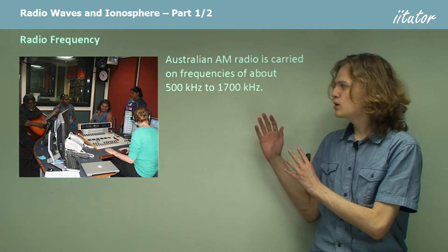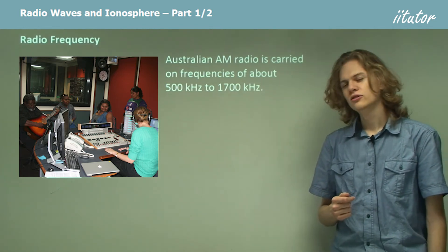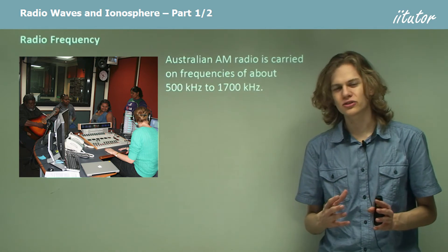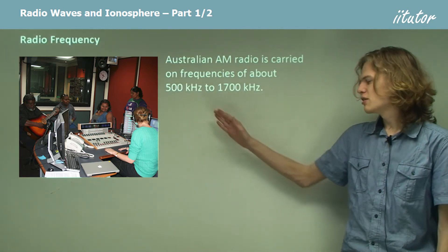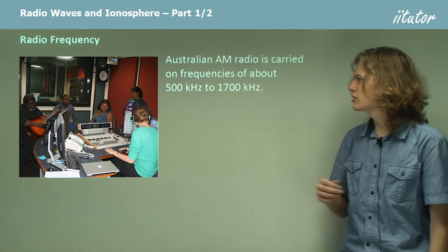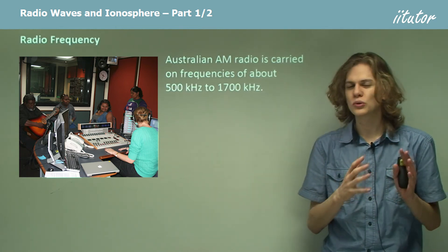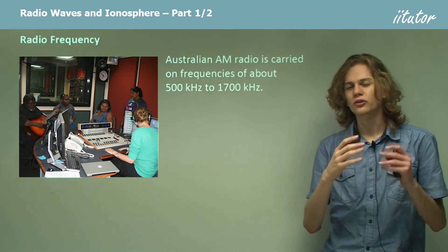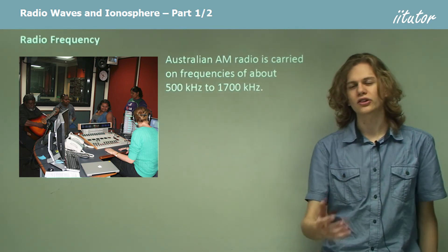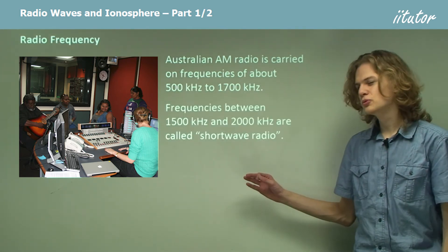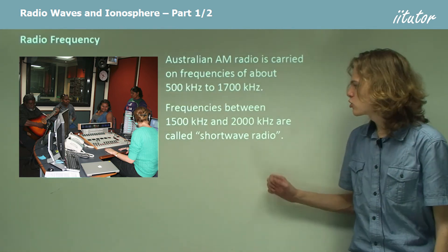Australian AM radio broadcasts on frequencies of between about 500 kilohertz to almost 2000 kilohertz. This is the band of frequencies that you can tune an AM radio to. If you've ever seen an AM radio, you'll know that the numbers on it tend to be from about 570 to about 1,600 or 1,700, corresponding to the frequency of radio wave you're tuning the radio to receive. Frequencies of between about 1,500 to 2,000 kilohertz — that is, 1.5 to 2 megahertz — are called shortwave radio.